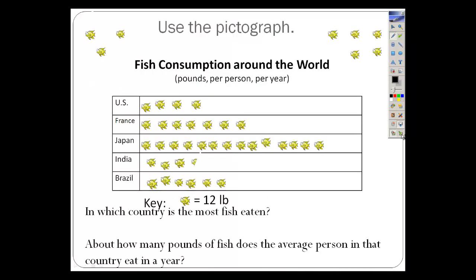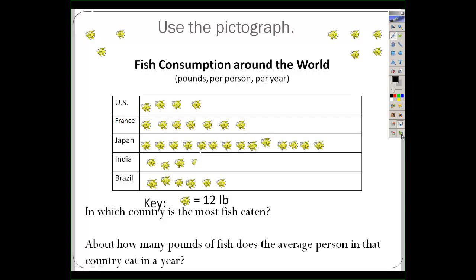Let's do another one. This time we're talking about fish consumption around the world — pounds per person per year. We're going to use this pictograph to figure out which country has the most fish eaten. The US has four fish symbols, France has seven, Japan has a bunch. Obviously Japan is going to be the most compared to India, Brazil, US, and France. The country with the most fish eaten is definitely Japan.